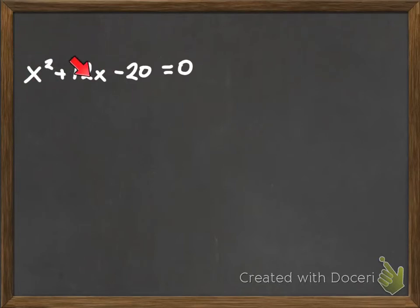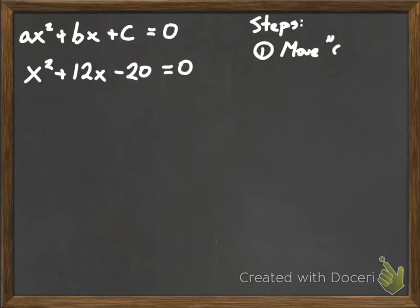So the x squared and whatever this coefficient is here in x. In this example you would want like ax squared plus bx. You want all of this on the left side and then everything else on the right side of the equation. So that's going to be my first step, and it depends again how it's written.